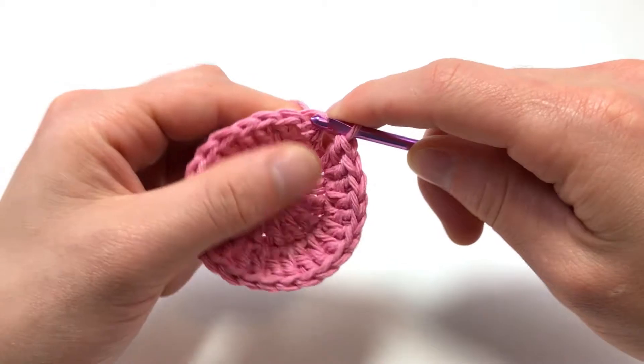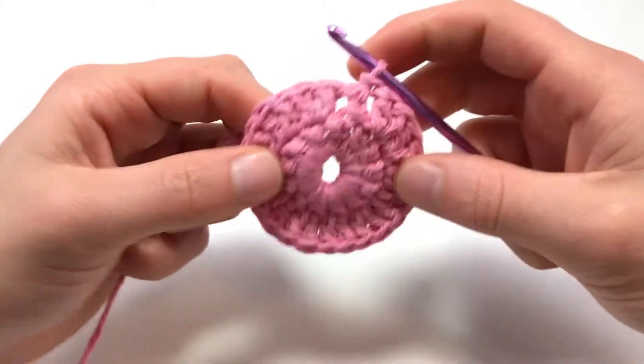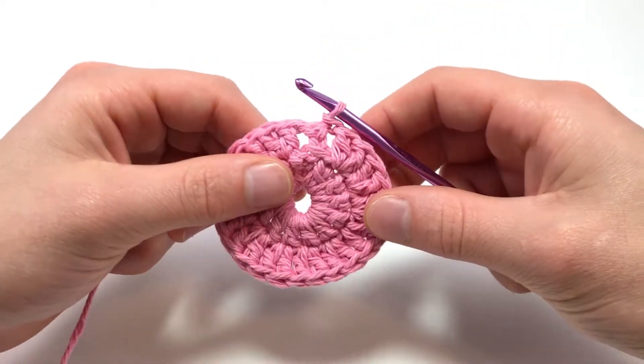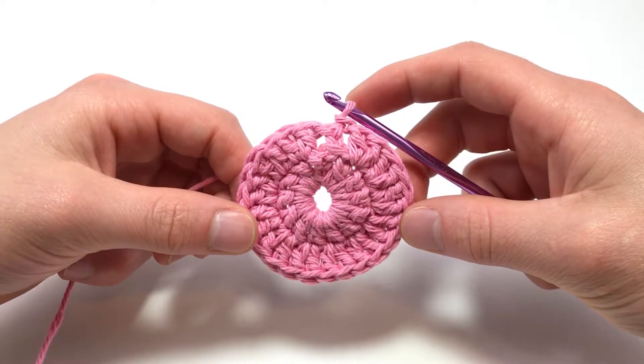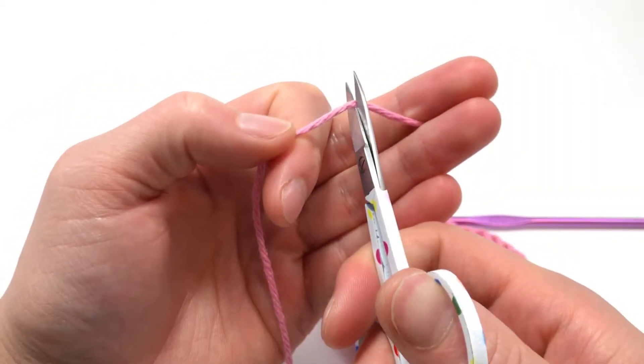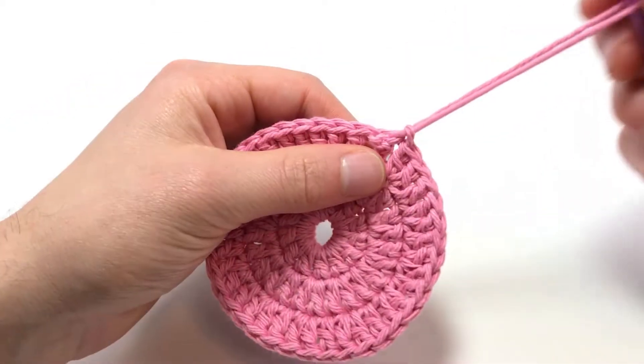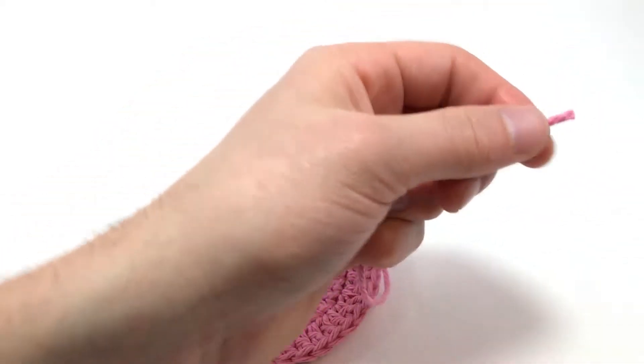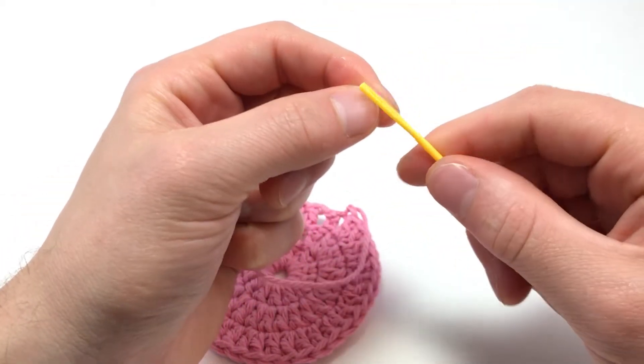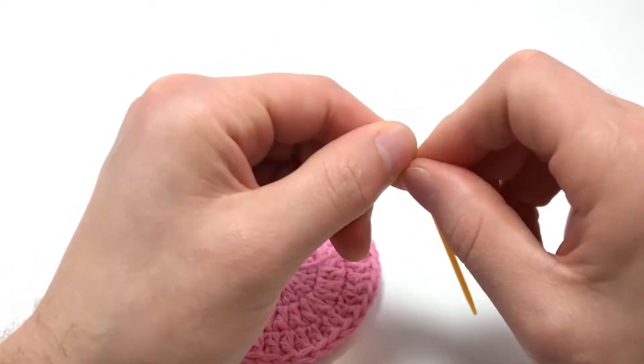And that's how you join in the round for crocheting. Continue using this method, chaining before each round, and when you get to a size you want, simply cut and pull through at the end to make a final knot, which you can then sew into the piece to hide it or use it to sew pieces together.